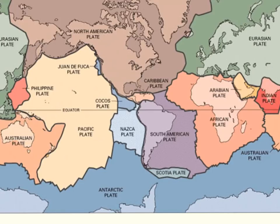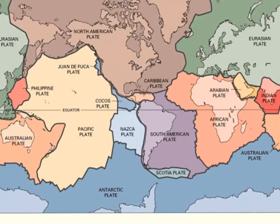This map shows us the different plates that make up the surface of the Earth. The brown one is the North American and Caribbean plate; the green one is the Eurasian plate, which continues around. We also have the Australian plate, the Juan de Fuca plate, and the Philippine plate, among many others. At the edge of every plate you see dark lines — those are our plate boundaries, and depending on how our plates are moving, we have different types of boundaries and different types of landforms.